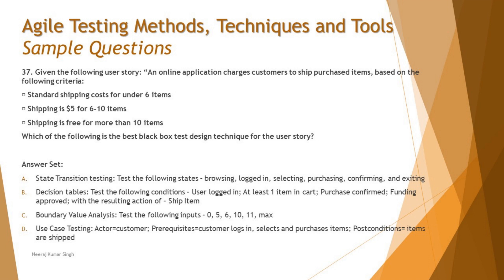You should have an answer in mind given the scenario, because there is a range here: below six items is a standard cost, six to ten is $5, and more than ten is free. All they're talking about is mathematical ranges. So we have two possibilities: equivalence partitioning and boundary value analysis. Now let's look at the options with that context — always have your answer in mind before looking at the options.